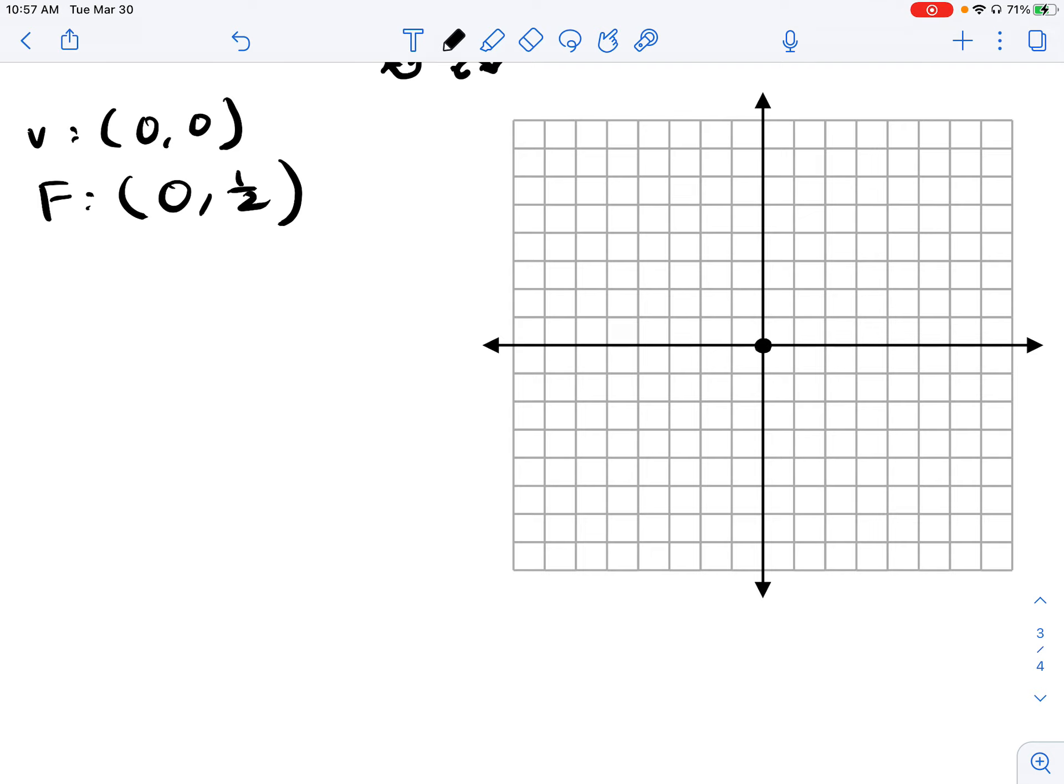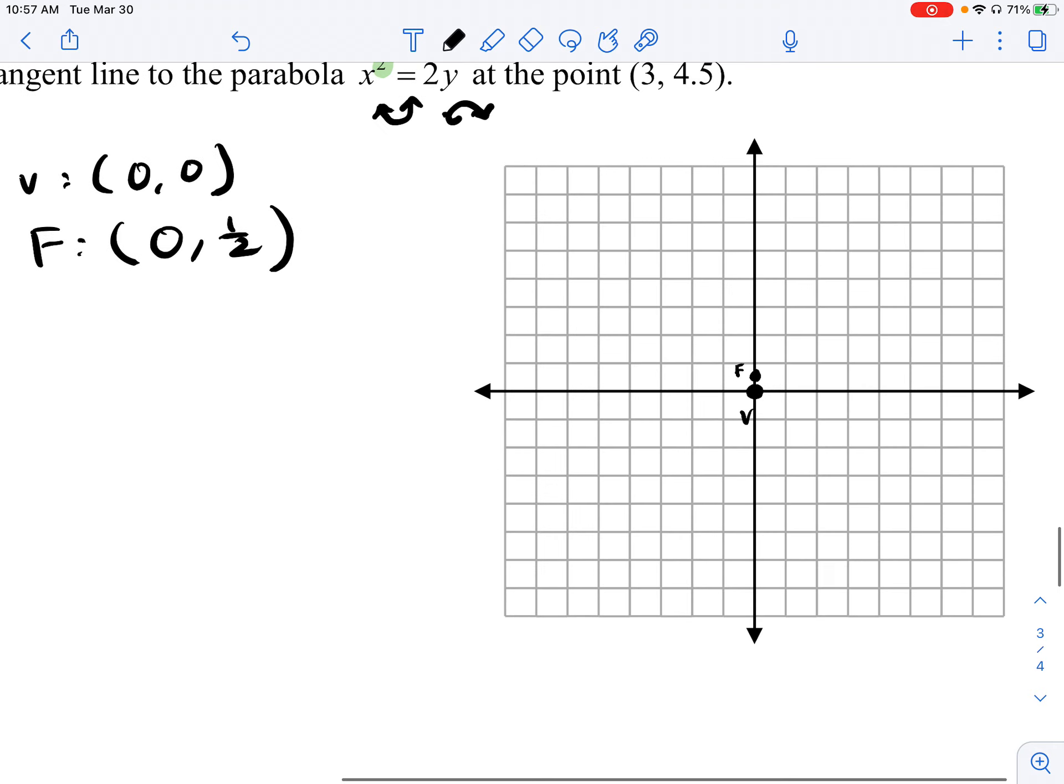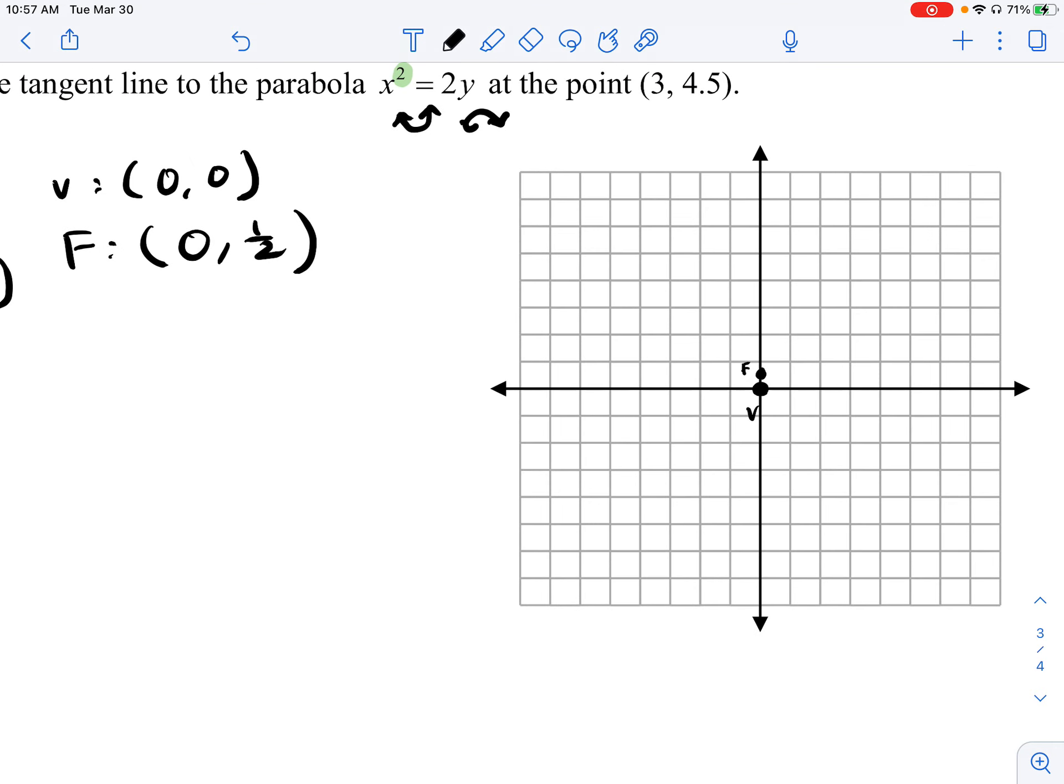Let's actually take a moment and just graph those points here real quick. So I have (0, 0), there's my vertex. That's the lowest point of my parabola. My focus is going to be right above it. There's my focus, there's my vertex. We were given in the problem, the point of tangency is going to be (3, 4.5), which is right around here.